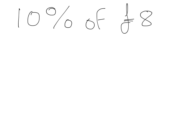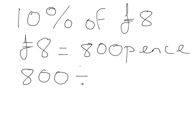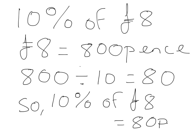8 pounds is 800 pence. So the calculation we need is 800 divided by 10, which will give us 80. So, 10% of 8 pounds is 80 pence.